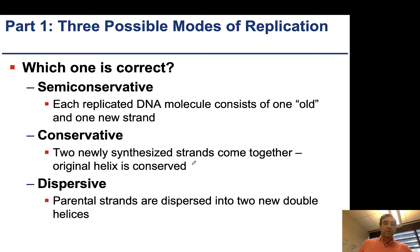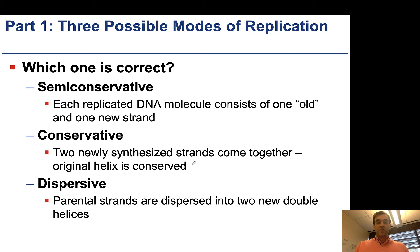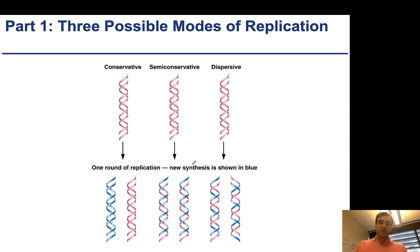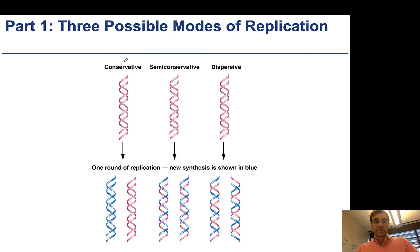One model is called semi-conservative, one model is called conservative, and one model is called dispersive. Each of these different models would result in a difference for where the old DNA and new DNA is incorporated, and it's easiest just to look at this visually to see the three different processes.